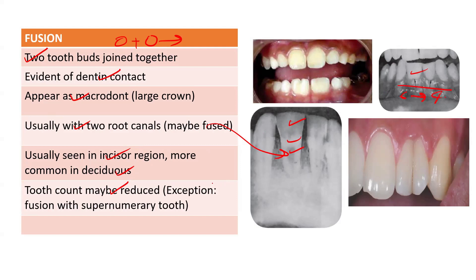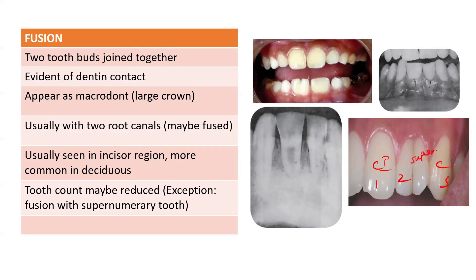The exception to reduced tooth count is the presence of a supernumerary tooth. In this diagram you have your central incisor, canine, and lateral incisor — but the fusion is actually occurring between the lateral incisor and a supernumerary tooth, so in this case the number of teeth in the arch appears normal.